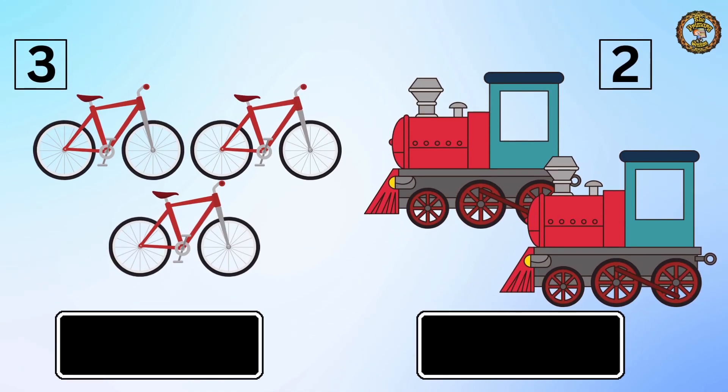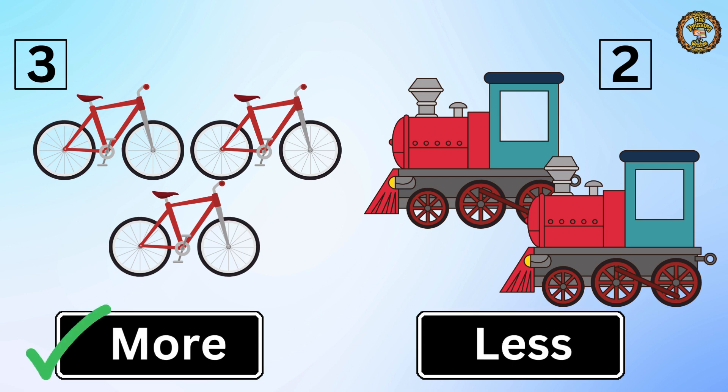Next, we have three bicycles on the left and two train engines on the right. Which one is more? That's right — three bicycles are more than two train engines.